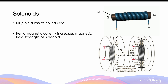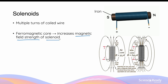Solenoids consist of multiple turns of coiled wire. Very commonly in solenoids you will also see a ferromagnetic core inserted into the coiled wires. Here we have blue coiled wires connected to a potential difference, and a cylindrical iron core, which is ferromagnetic, inserted through it. The ferromagnetic core becomes magnetized as a result of the magnetic field produced by the current in the solenoid. Once magnetized, the ferromagnetic material produces its own magnetic field, further increasing the overall magnetic field strength of the solenoid.